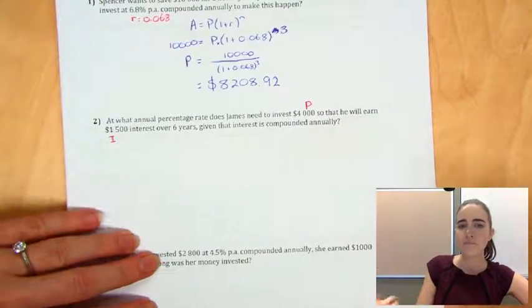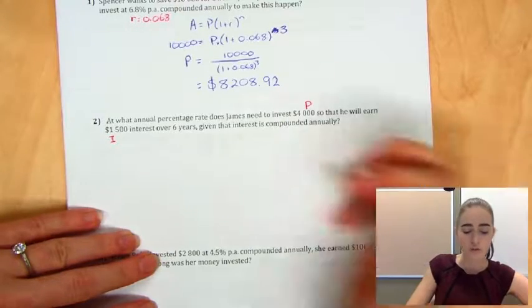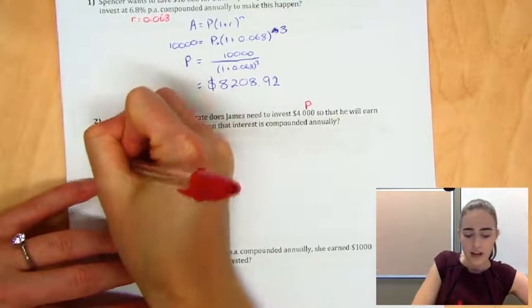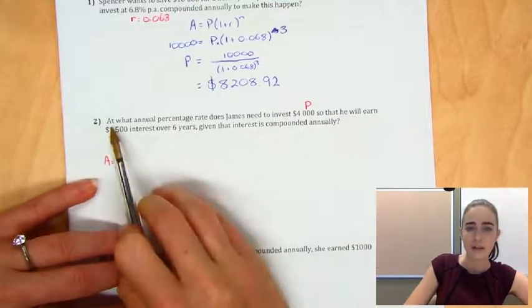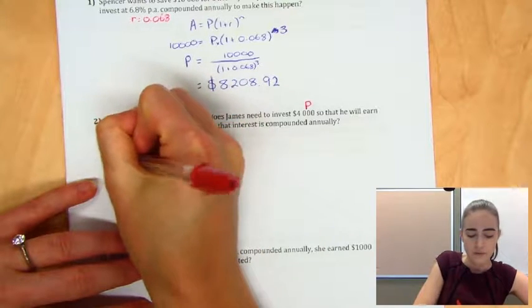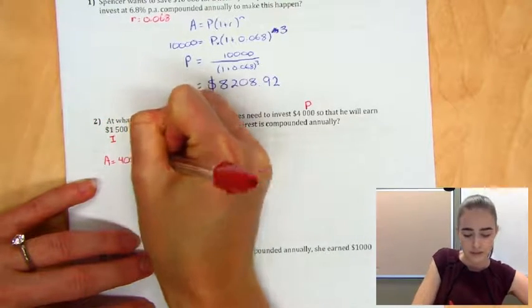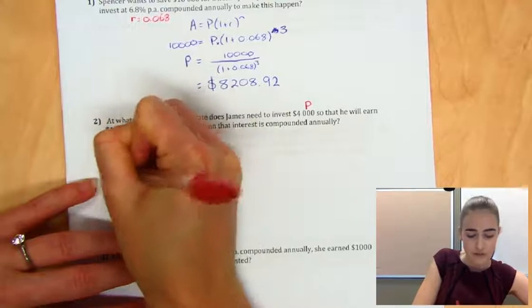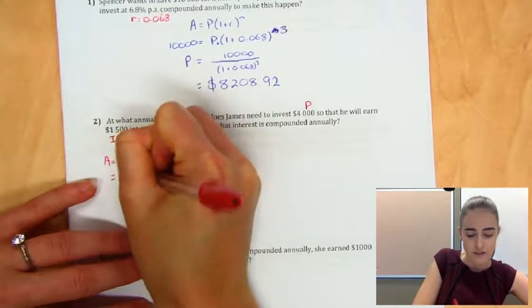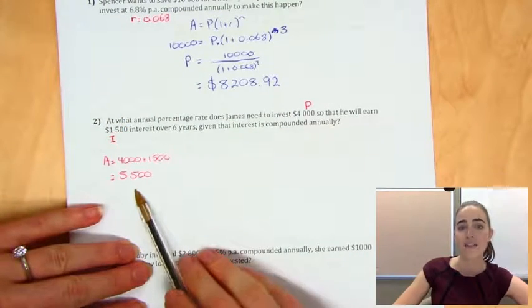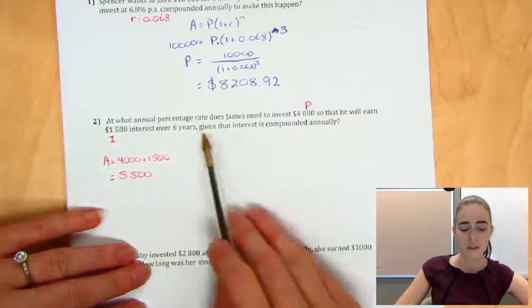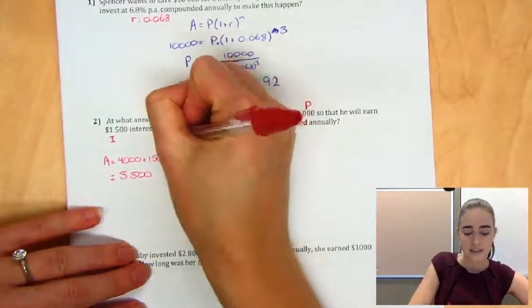To calculate the amount of money he's going to have at the end, the total amount, we'd have to have our principal plus the interest. So that $4,000 plus the $1,500, we'd end up with $5,500. So that's our amount. That's our A in our formula. And the last one, we've got our six years. So that's our N there.